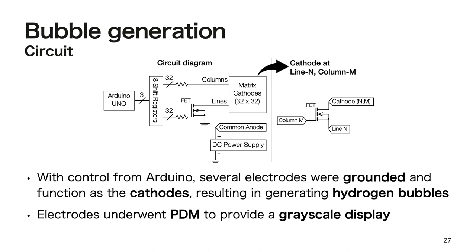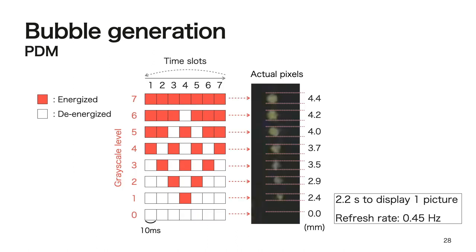Furthermore, pixel electrodes underwent pulse density modulation by the Arduino to provide a grayscale display. For a detailed explanation of PDM, please refer to the paper. In short, for a pixel assigned to level N of the grayscale, the program activates the corresponding electrode N times during one refresh cycle. As shown in this figure, table scans are required to draw one screen and the number of electrode utilization times is unified to the grayscale level value. The right picture shows the actual bubble pixels at each grayscale level.